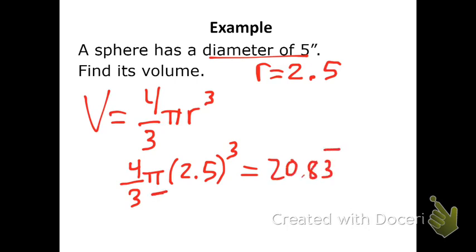And notice I didn't multiply in the π, so I'm going to keep that in terms of π. So that would be 20.83 repeating π cubic inches. If you wanted that not in terms of π, then you just take 20.83 repeating and multiply it by 3.14, and you get that the volume is 65.4 cubic inches.